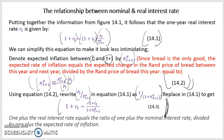This gives us equation 14.3, which basically says: 1 plus the real interest rate equals the ratio of 1 plus the nominal interest rate divided by 1 plus the expected rate of inflation. This new equation 14.3 gives us the exact relation of the real interest rate to the nominal interest rate and expected inflation.